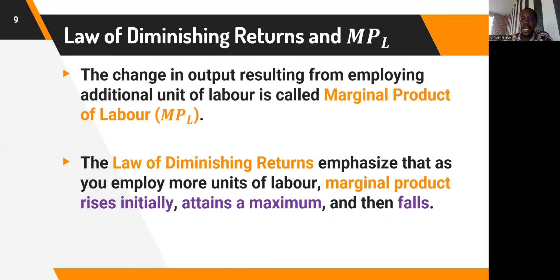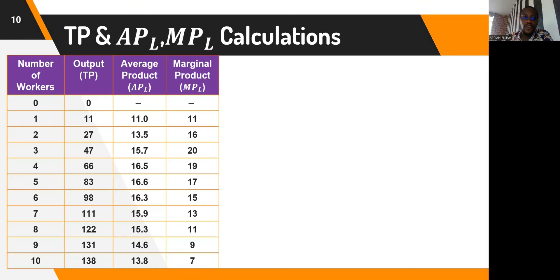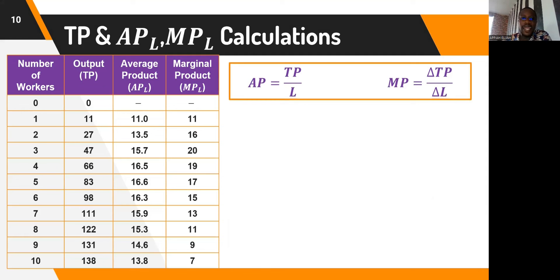The law of diminishing marginal returns emphasizes that as we employ more units of labor applied to a fixed input such as capital or land, the marginal product — the additional output — rises initially, attains a maximum, and then falls. We have a table on the screen showing the number of workers from zero to ten, corresponding total product, average product (total product divided by labor), and marginal product (change in total product divided by change in labor).